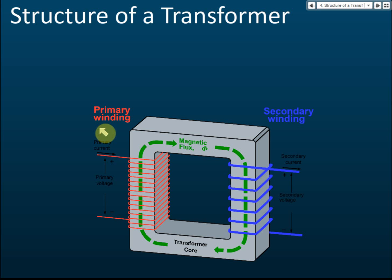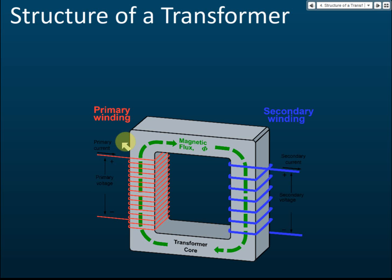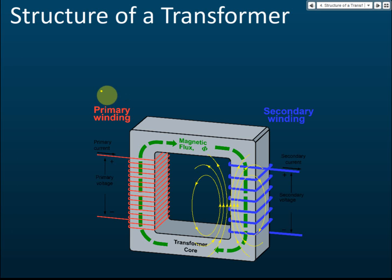This is an illustration of a transformer. You can see there is an iron block, and on one side there is a wire — the primary winding — and on the other side there is wire as well — the secondary winding. The primary winding is the input, meaning it connects to the source of electricity. The secondary winding is the output.